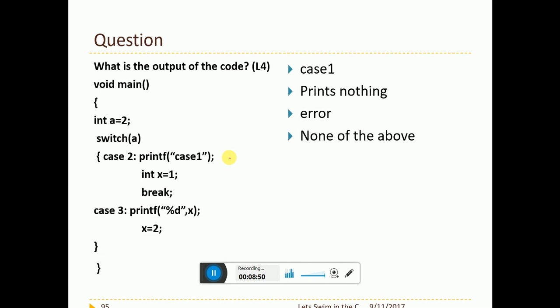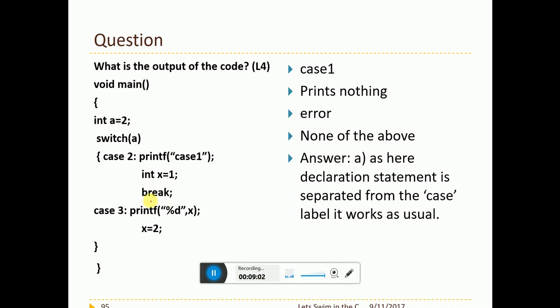Now, what is the output here? Switch of A, printf case 1, int x is equal to 1, break. Case 3, printf x, x is equal to 2. So what do we do here? We have A equal to 2. I will have to try matching this. And this is very straightforward question. So what will happen? I will just come here. This is true. So this will be printed. Simple. Nothing. Case 1 will be printed and nothing else will happen.